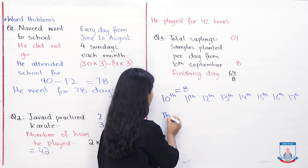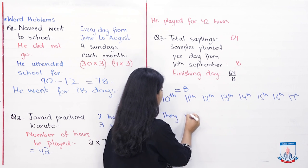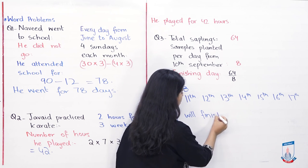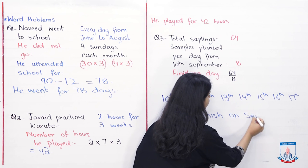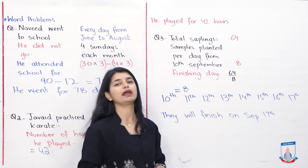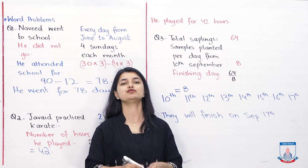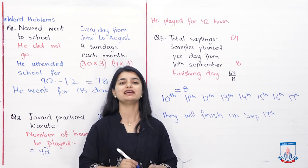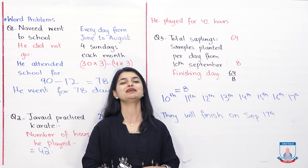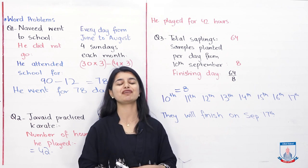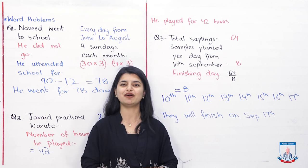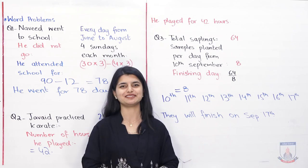They will finish on September 17th. In this manner you have to answer your third word problem as well. With this, students, our Exercise 5D is finished. We will start the next lecture with Exercise 5E, which will be the end of this chapter. I will be seeing you in the next lecture — until then, take care and Allah Hafiz.